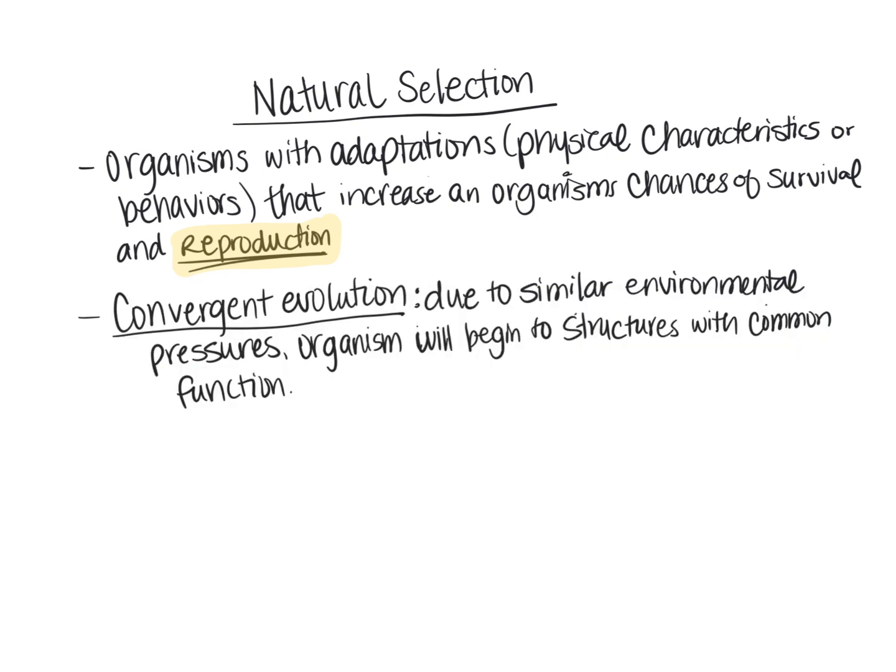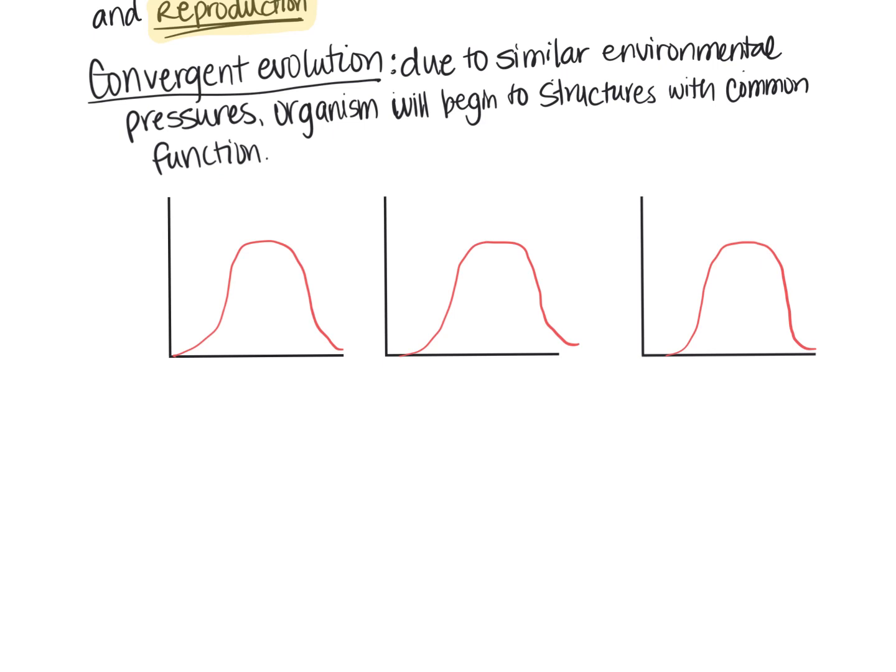So when we're talking about natural selection, there are three types of natural selection that you've learned about. So let's take a look at each one of these. I have here three graphs, and this graph is showing the distribution of organisms or traits of the organism. This would be the average or the middle value. This is the lower extreme. This is the upper extreme. And I've got this drawn three times for the three different types of natural selection.